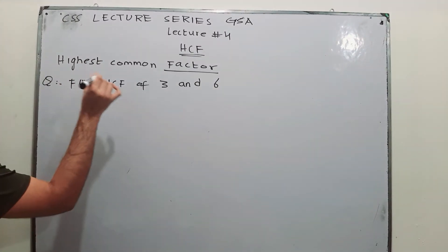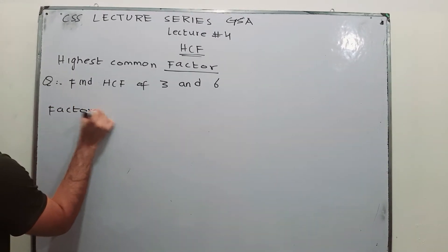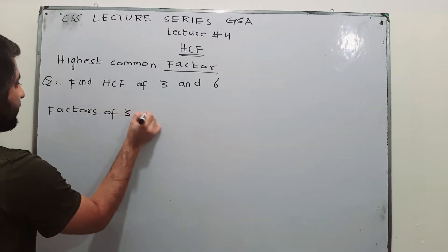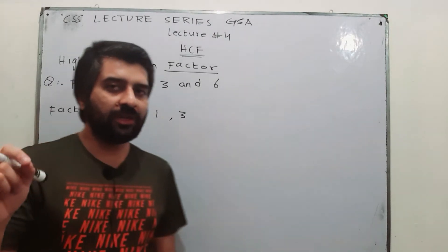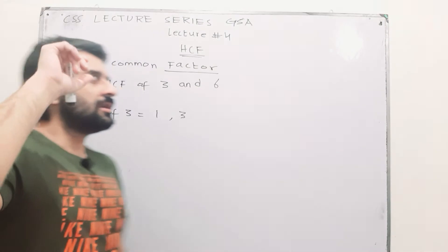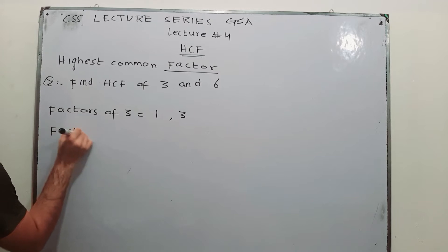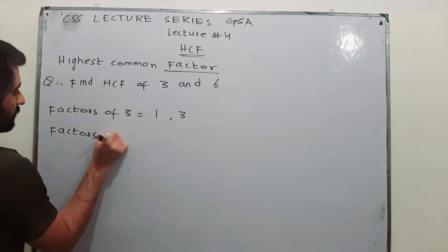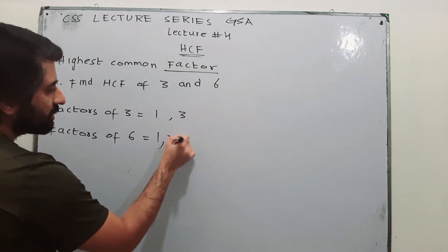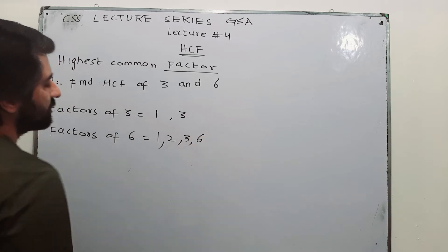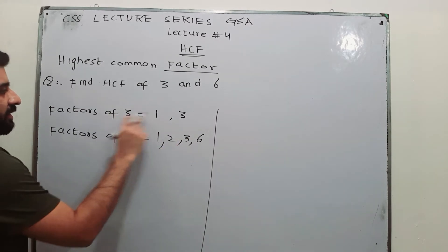First, write down the factors of 3. Those are 1 and 3 — the numbers which can divide 3 completely with no remainder. Now the factors of 6 are: 1, 2, 3, and 6, since 2 divides 6 three times, 3 divides 6 two times, and 6 divides 6 one time.